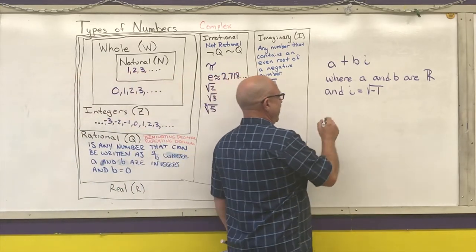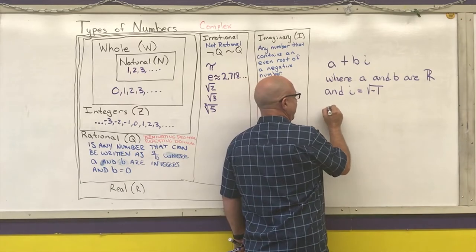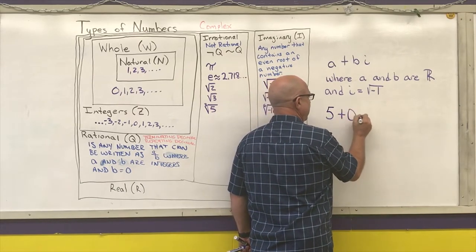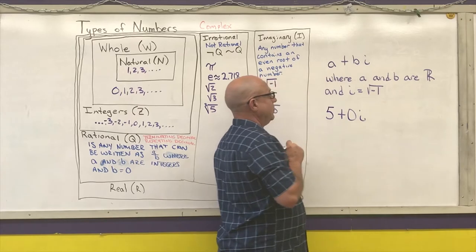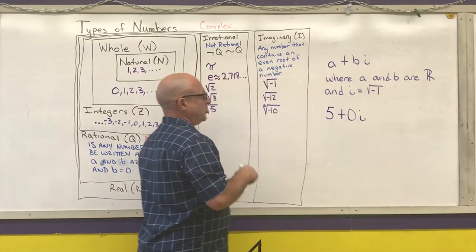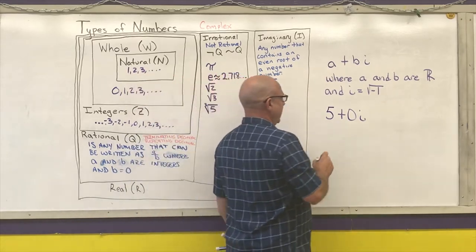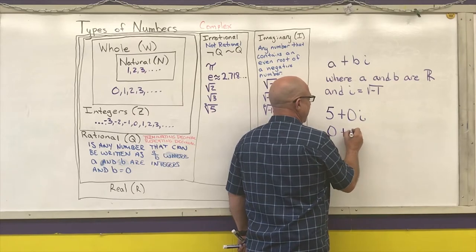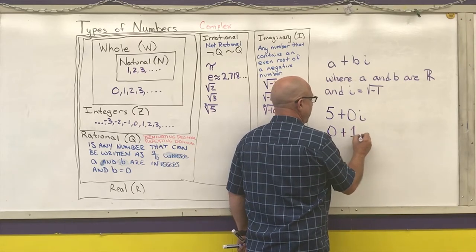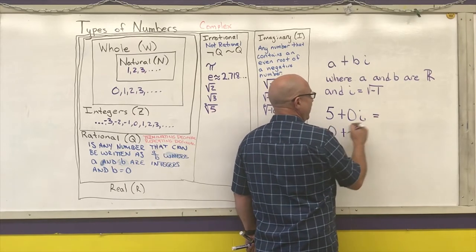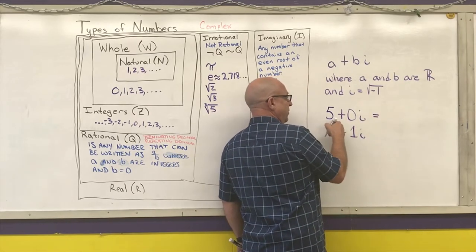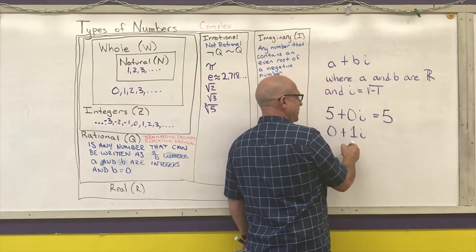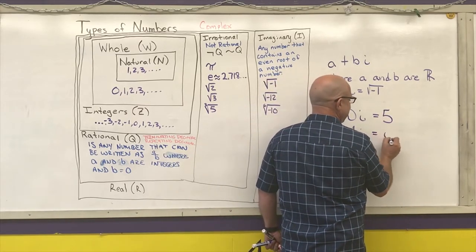For example, the number five can be written as five plus zero i. The square root of negative one can be written as zero plus one i. The normal way you would see the first one written would just be five, and the normal way you would see the second written would just be i.